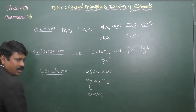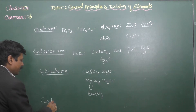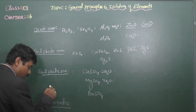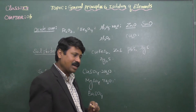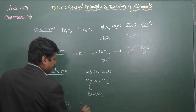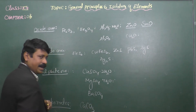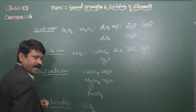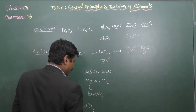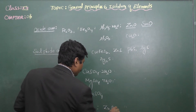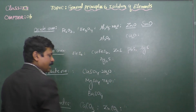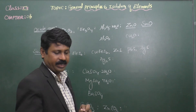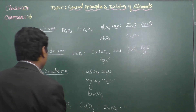Some metals occur in the form of carbonates. Examples include: CaCO₃ (limestone), FeCO₃ (siderite), ZnCO₃ (calamine), and dolomite. These carbonate ores are another important category in the classification of metallic ores.